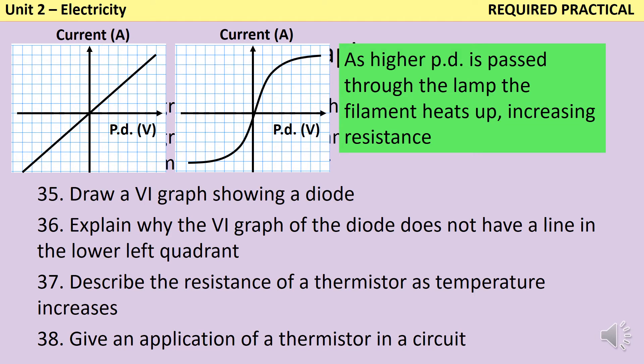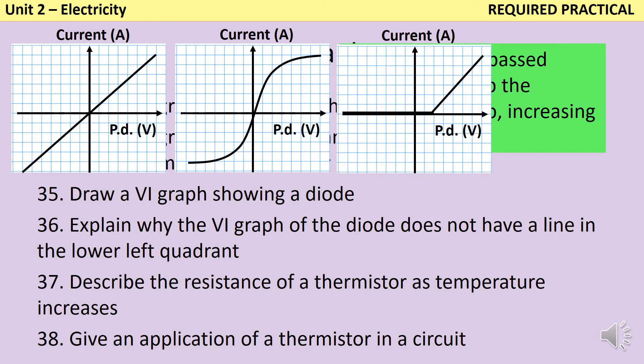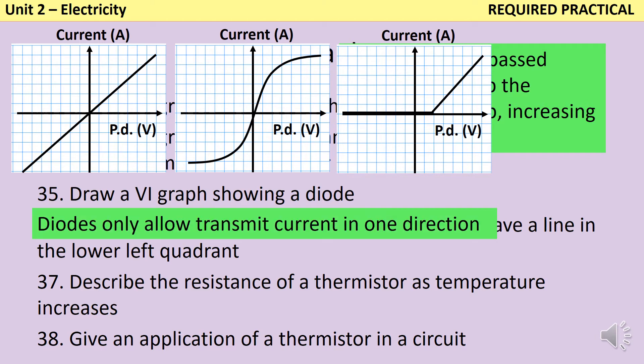The VI graph for a diode looks a little bit different and it only has really a graph in the top right-hand quadrant. The reason why we don't see anything in the bottom left, so why you don't get a current flowing if you reverse the potential difference, is because a diode will only allow current to flow in one direction.